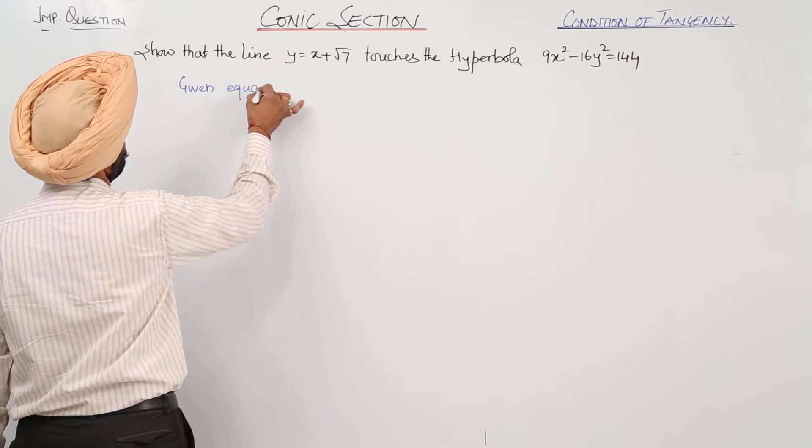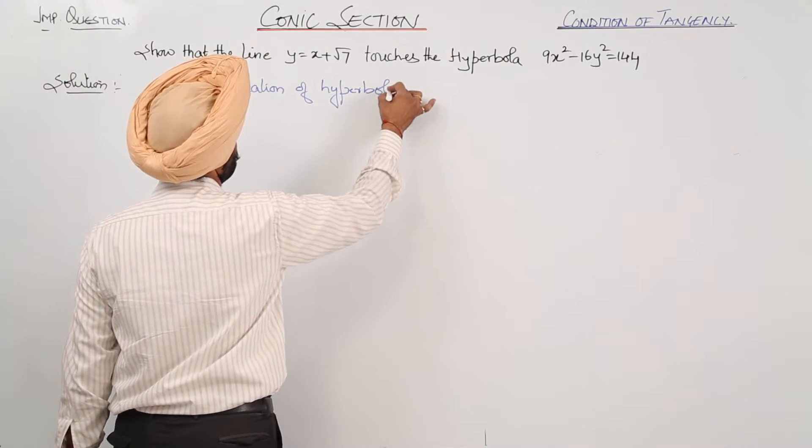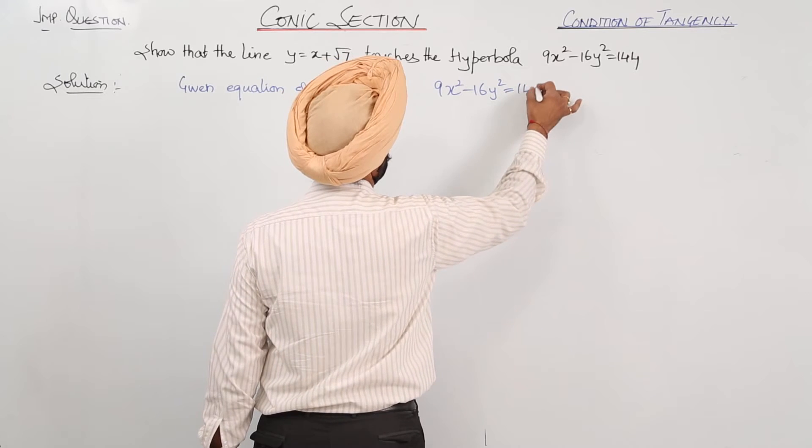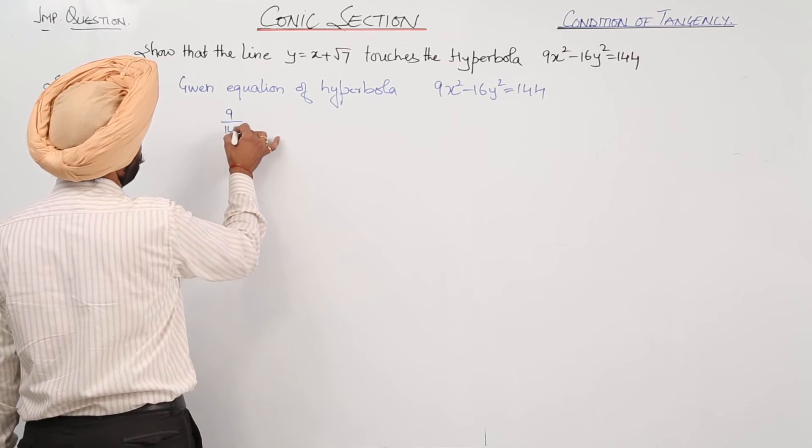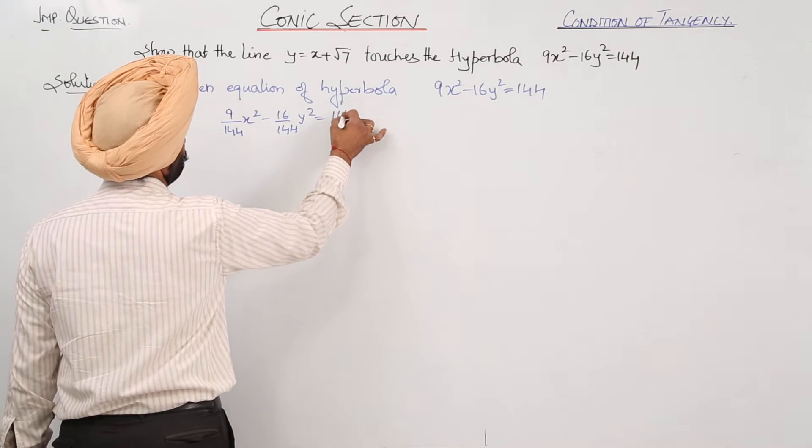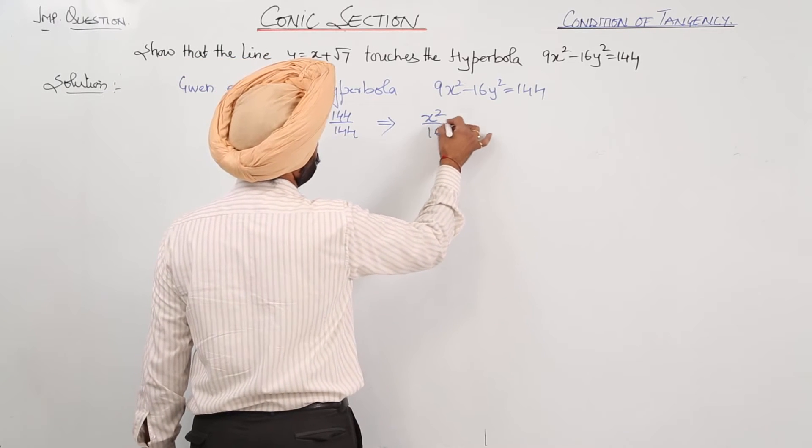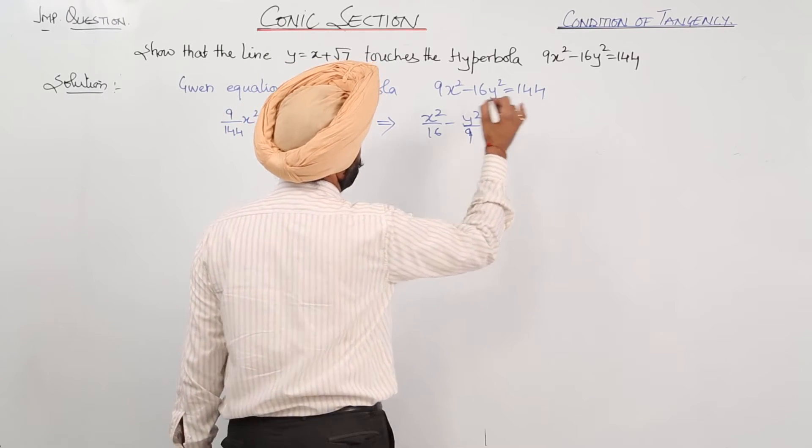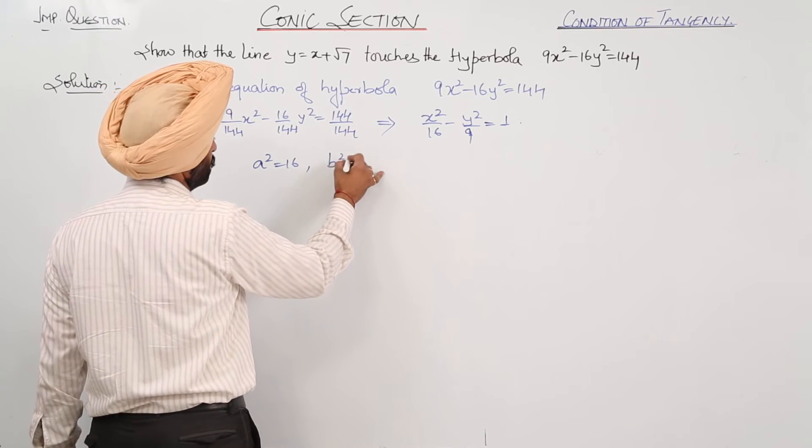Given equation of hyperbola is 9x square minus 16y square equals 144. What we can write is 9 upon 144 x square minus 16 upon 144 y square equals 144 upon 144. So we have x square upon 16 minus y square upon 9 equals 1. a square equals 16 and b square equals 9.